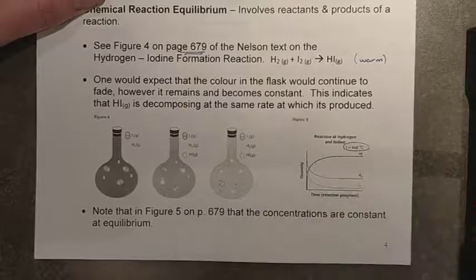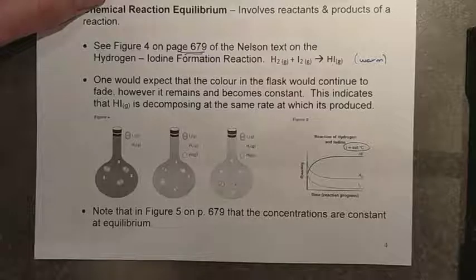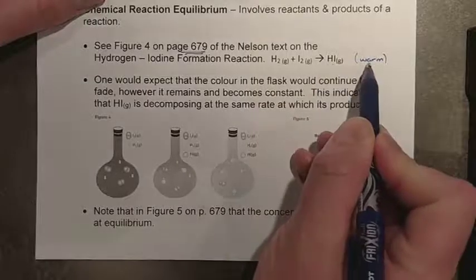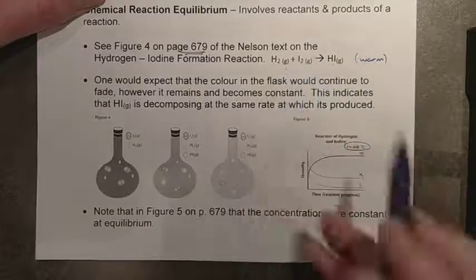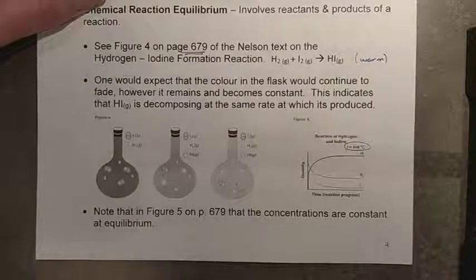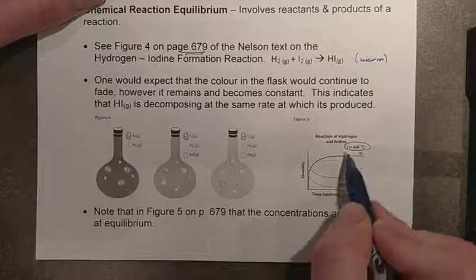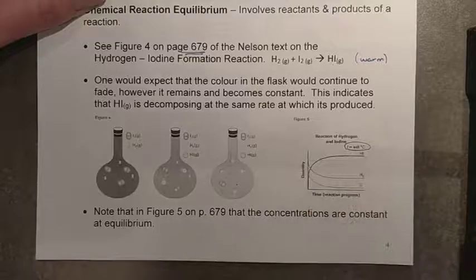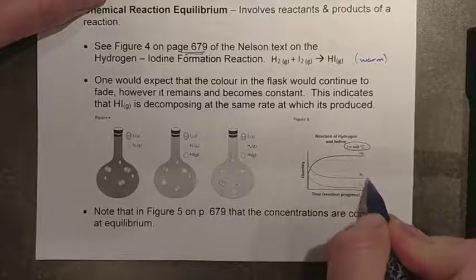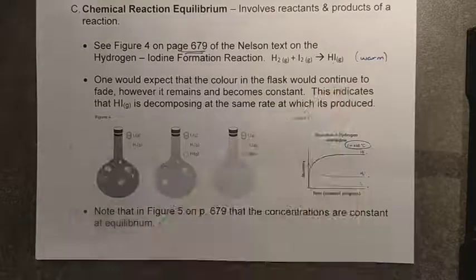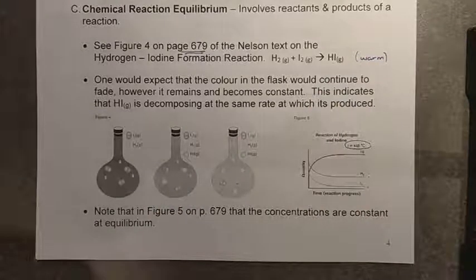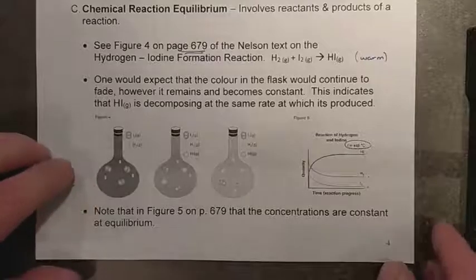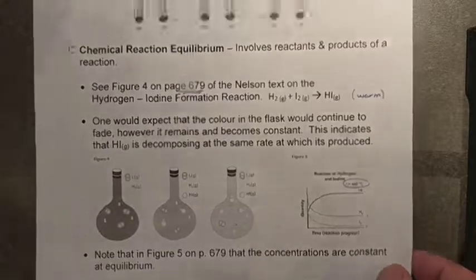At a set temperature — in this case 450°C — we find that there's always a small amount of purple that remains. This means that some of the hydrogen iodide under these warm conditions is also decomposing back into iodine and hydrogen, so we can't completely consume all of the reactant. At the point where concentration values reach a steady state and nothing appears to be changing anymore, we have achieved equilibrium — the rate of formation is now equal to the rate of decomposition.